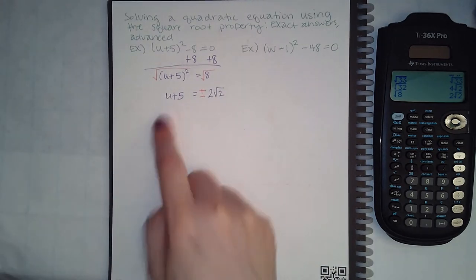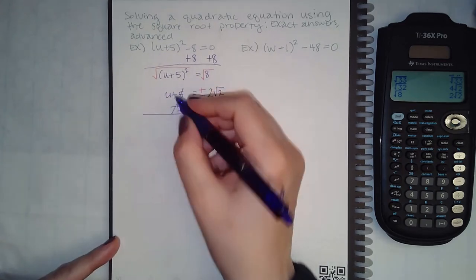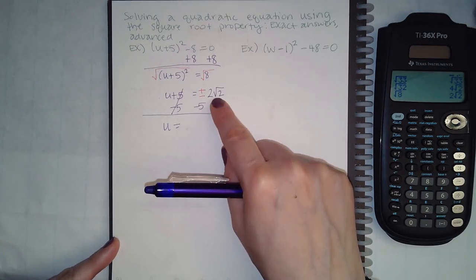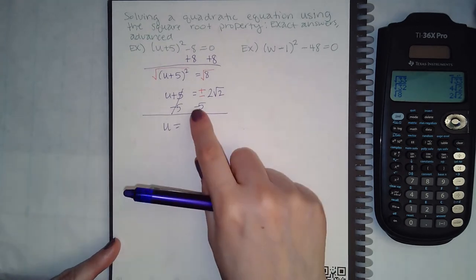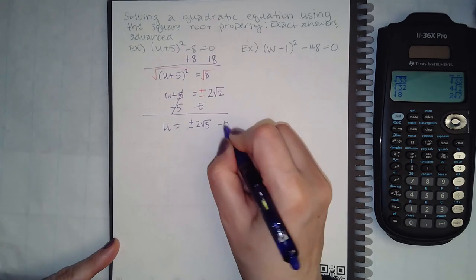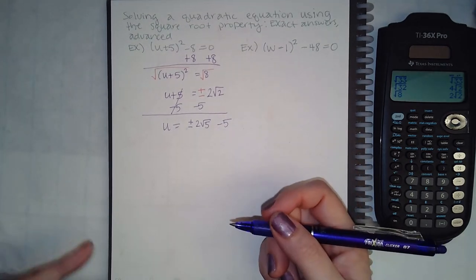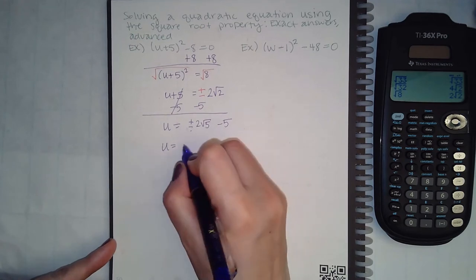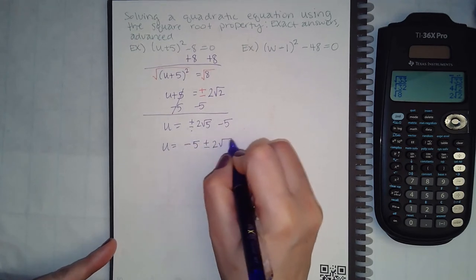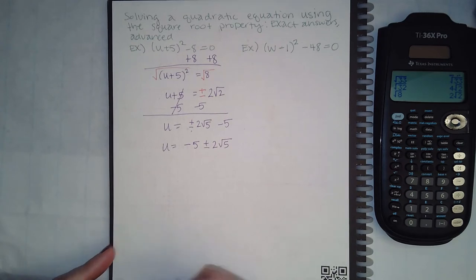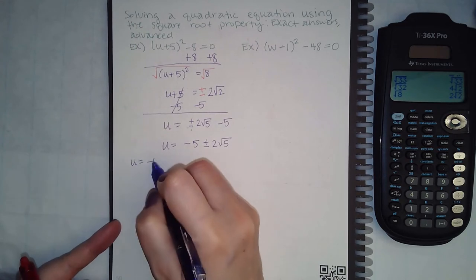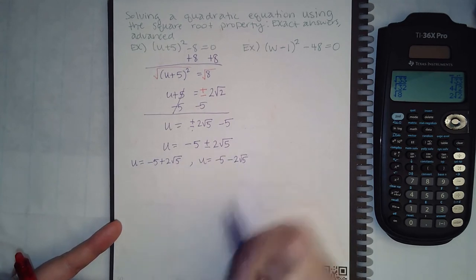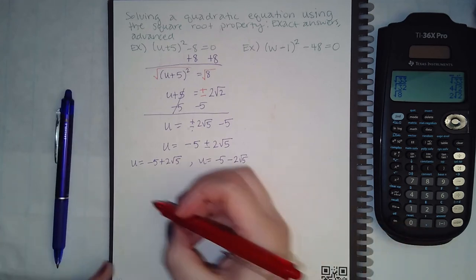To continue solving for u, I subtract 5 from both sides, but these are not like terms — a constant without a root and a constant with a root cannot be combined. So I write it as u equals negative 5 plus or minus 2 square root of 2. Mathematicians keep the plus or minus in the middle, writing the negative 5 first and the radical afterward. Essentially there are two answers: u equals negative 5 plus 2 square root of 2, and u equals negative 5 minus 2 square root of 2.